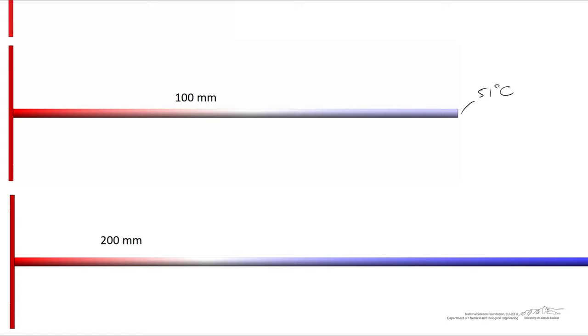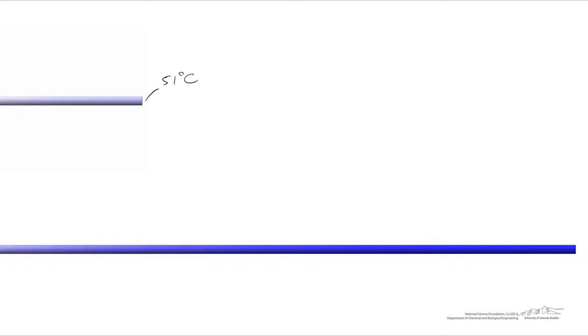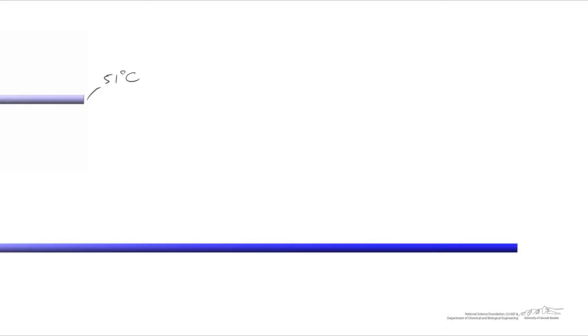At 200 mm, the majority of the fin is not being well utilized — the temperature near the tip is starting to look like 20°C. Going even further to 300 mm, as we scroll across, the temperature is very close to the ambient temperature of 20°C — essentially T∞ with very little driving force at the end. That part of the fin just isn't doing anything at all. Looking at the perspective view makes it even more apparent: the majority of the fin is doing nothing because its temperature is so close to ambient.